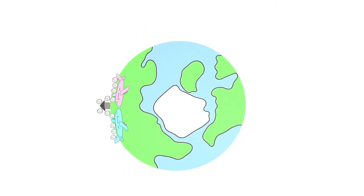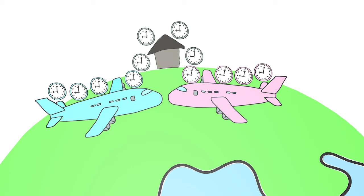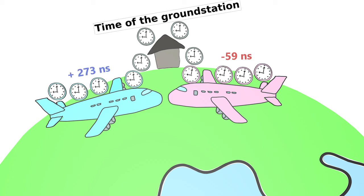The scientists then took the times of the four respective clocks and averaged them. The clocks on the ground indicated the elapsed time on the ground. The clocks of the red faster aircraft went back an average of 59 nanoseconds. The passengers on this aircraft have aged 59 nanoseconds less than the people at the ground station. The clocks of the blue slower aircraft went an average of 273 nanoseconds ahead. The passengers on this aircraft have aged 273 nanoseconds longer than the people at the ground station.